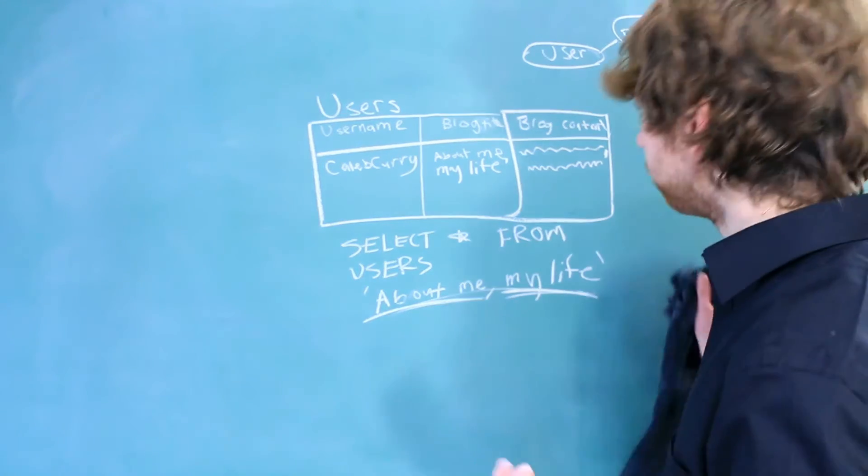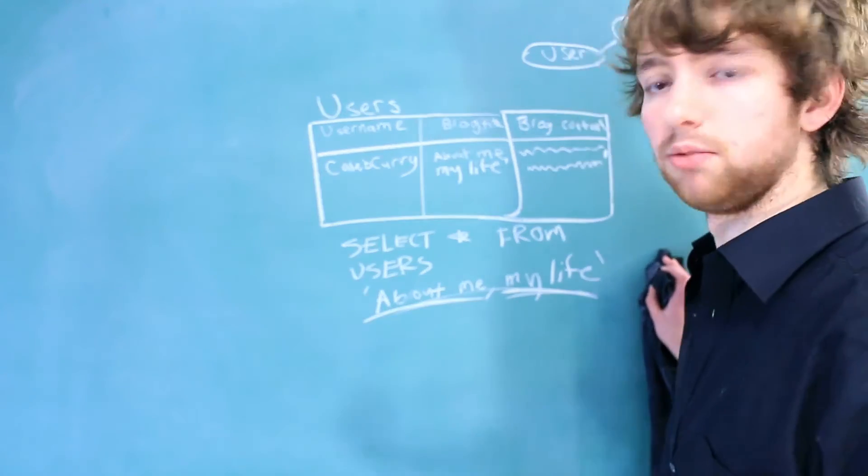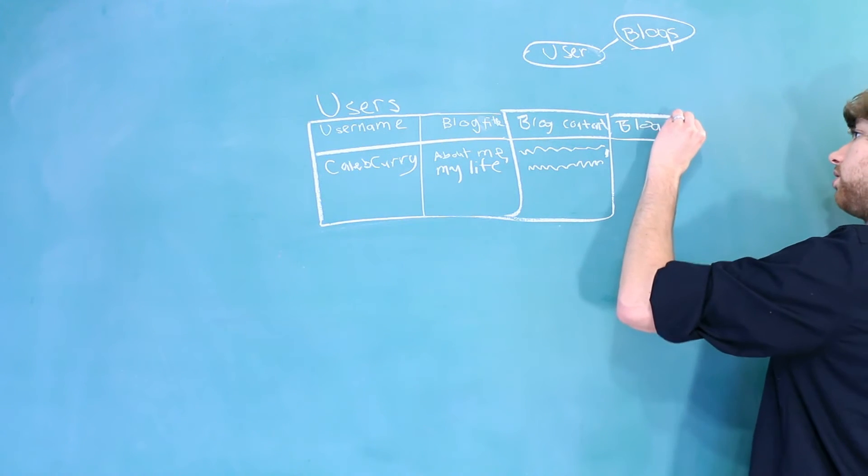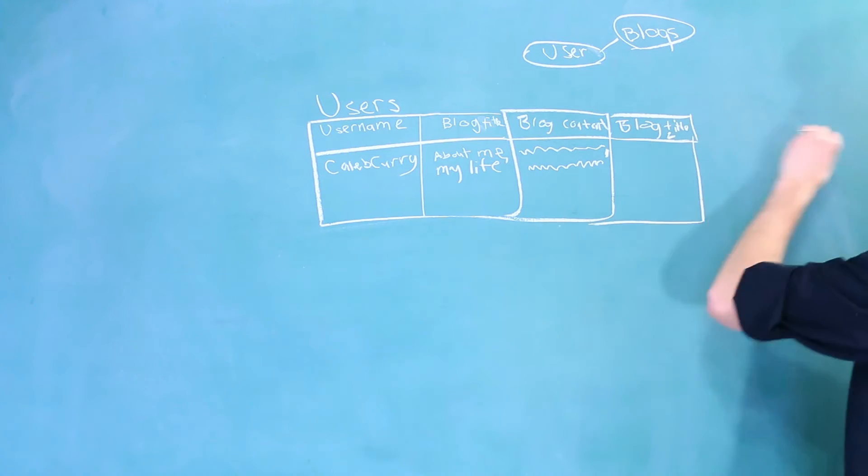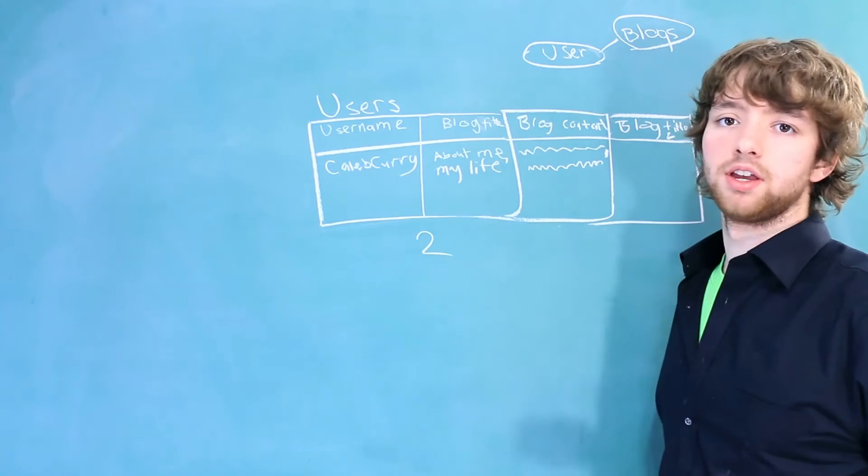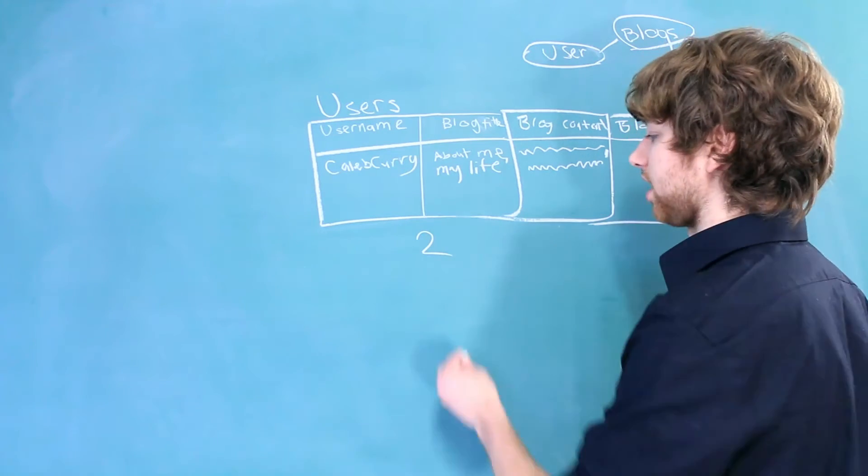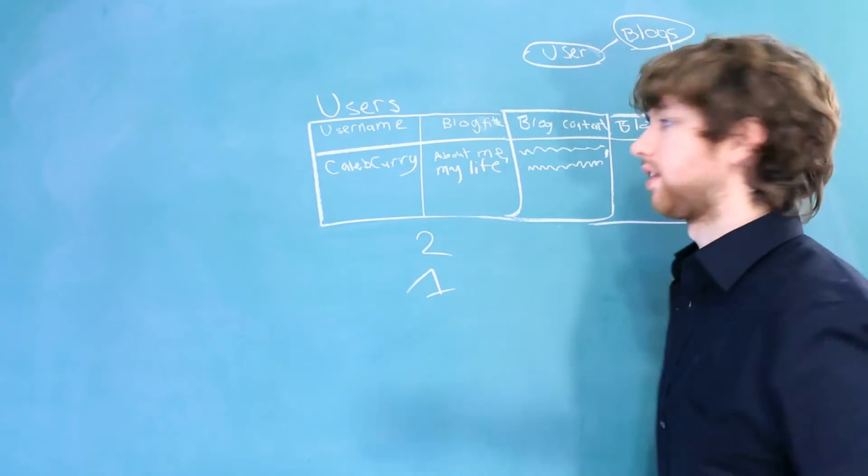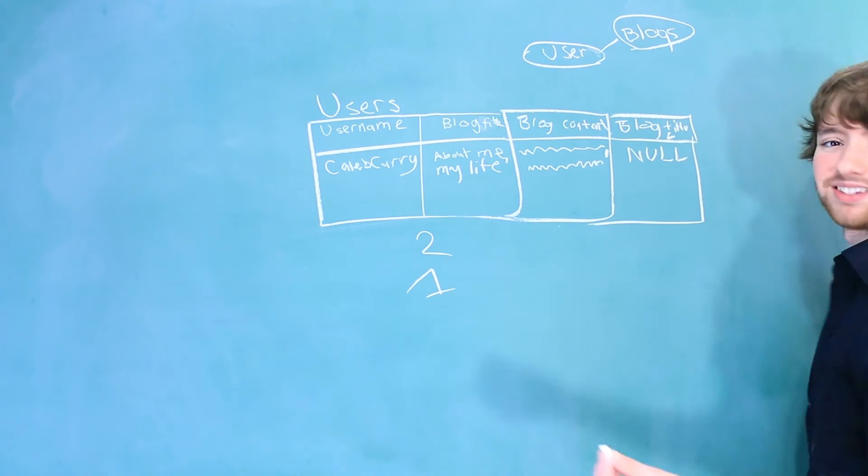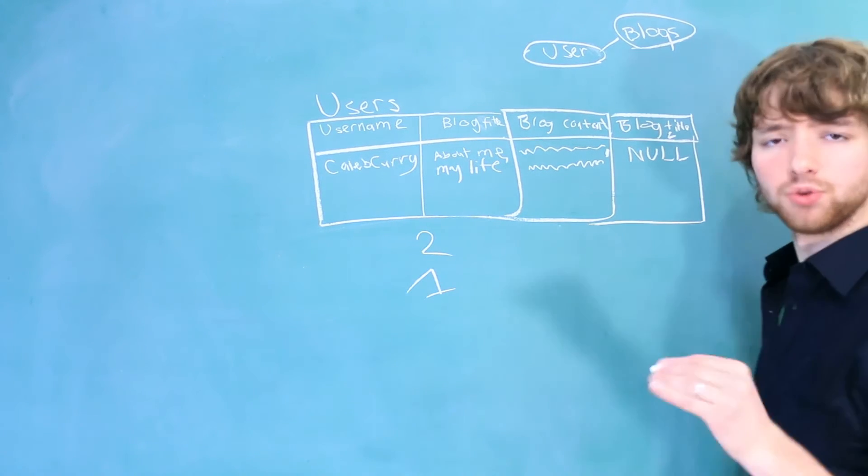So a way around this, let's add even more columns. So we could say blog title two and store that. And then you could have a blog content two. But that's also really bad, because now we're limited to two blogs. And plus, if someone only has one blog, that means all of this blog two stuff is going to be null. Wasted space is stupid. Don't do that.